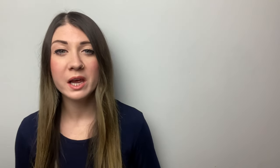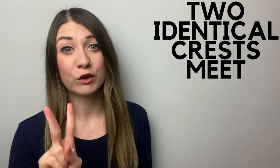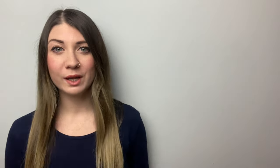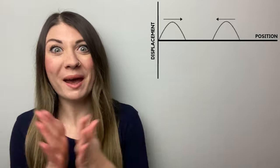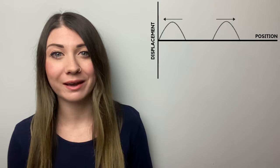Let's start off with three examples of what would happen if two waves of the same size meet. If two identical crests meet then the crest height would double. So before they would look like this approaching each other. And then they would combine to make a double crest, and then carry on out the other side again.